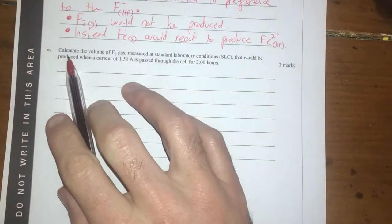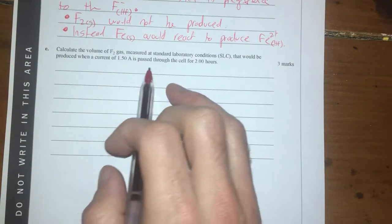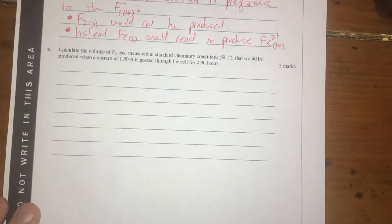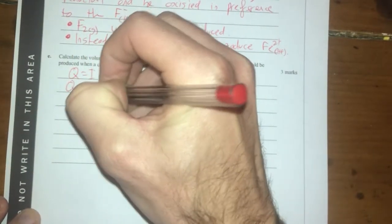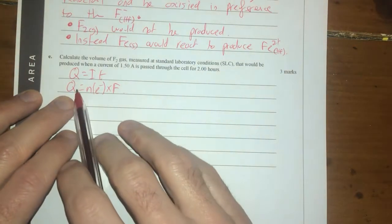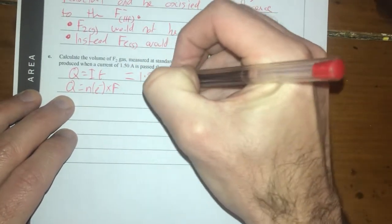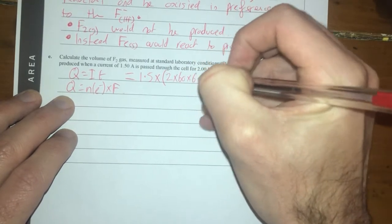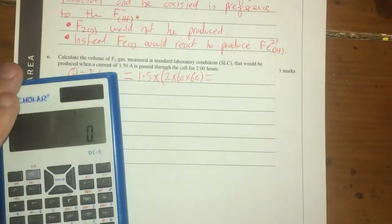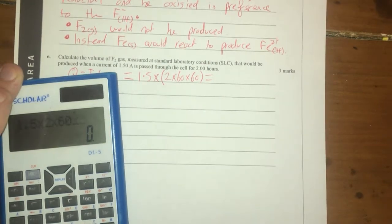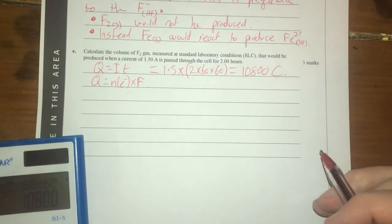Last question is a calculation question by the looks of it. Calculate the volume of F2 gas measured at standard laboratory conditions that would be produced from a current of 1.5 amps. So therefore we're going to go into a bit of electrochemistry in terms of that type of stuff. So what are my things? I got Q=IT and I got Q=n of electrons times F. I'm going to start to play around with these so Q=IT I've got IT here so therefore that's going to be equal to my 1.5 times 2 hours times 60 to give it minutes times 60 to seconds, so therefore that is going to be equal to 1.5 times 2 times 60 times 60 gives me 10800.